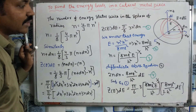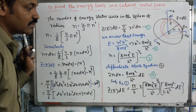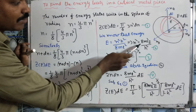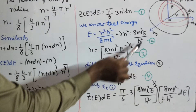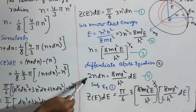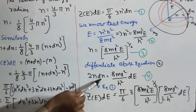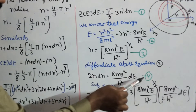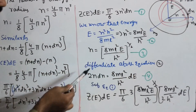We consider the energy equation. For a particle in a one-dimensional potential box, the energy is E = n²h² / 8mL². Therefore, n² = 8mL²E / h². Taking the square root gives n = (8mL²E/h²)^(1/2). This is equation number two. Differentiating equation two gives equation number three.